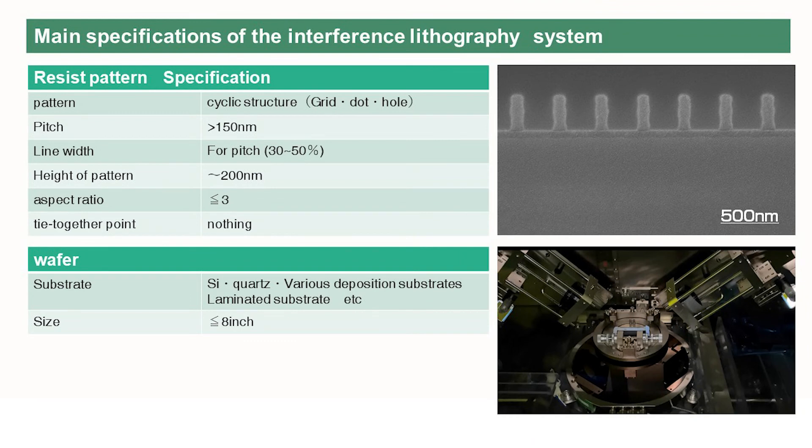Ushuo's interference lithography system can make a variety of periodic structures with pitches of 150 nm or larger, and various types of substrates can be processed.